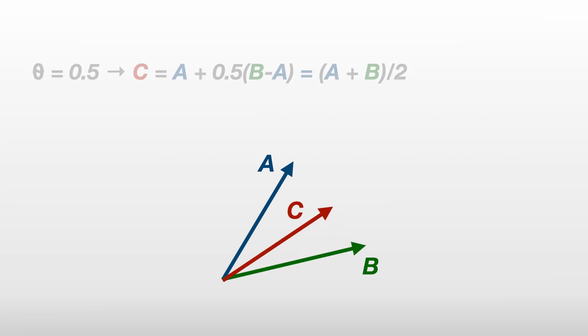If theta is somewhere between 0 and 1, we get a vector c somewhere between a and b. For example, if theta is equal to 0.5, then c equals a plus 0.5 times b minus a, which is a plus b over 2 and is directly between a and b.